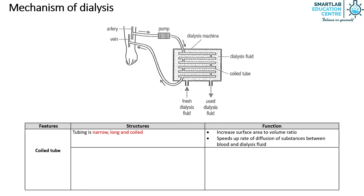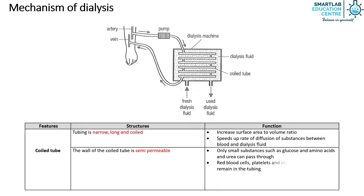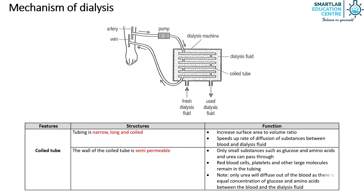Additionally, the wall of the coiled tube is semi-permeable. Only small substances such as glucose, amino acids and urea can pass through. Red blood cells, platelets and other large molecules will remain in the tubing. Do take note that only urea will diffuse out of the blood, as there is equal concentration of glucose and amino acids between the blood and the dialysis fluid.